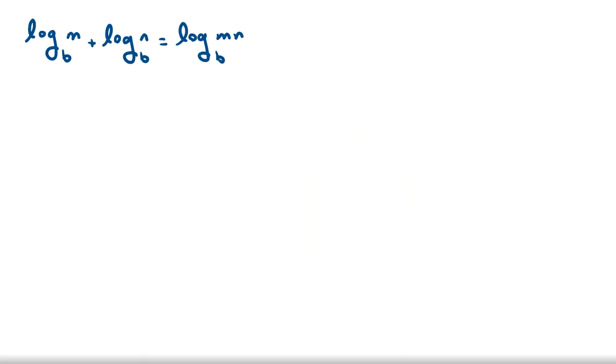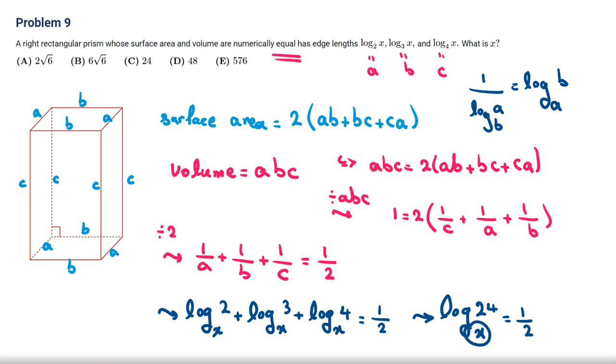And this part, you should use definition of logarithm. That if log base B of A equal to M, it is equivalent to B to the power of M equal to A. Log this, the power of this equal to. So here, we will see X to the power of 1/2 will be 24. If it's raised to the power of 2, X will be 24 squared, which will be 576. And the problem wants X here. So X is 576, which is E.